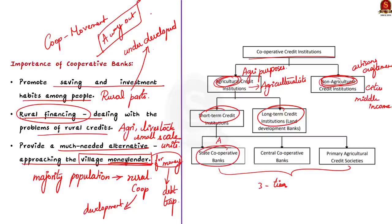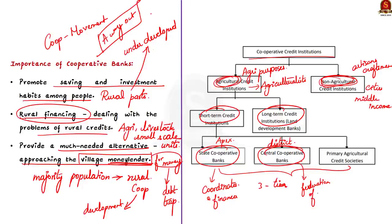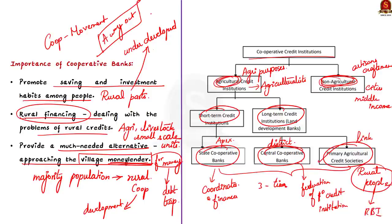At the district level, there are central cooperative banks, also known as district central cooperative banks, which are a federation of primary credit societies operating in a specified area, usually a district. At the village level, there are primary agricultural credit societies which directly deal with rural people. This unit encourages savings among agriculturalists, accepts deposits, gives loans to needy borrowers, and collects repayments. It serves as the last link between ultimate borrowers — that is rural people — and the RBI. Generally, RBI is the regulatory body for the Indian cooperative banking industry. For long-term agricultural credit, it is provided by land development banks.